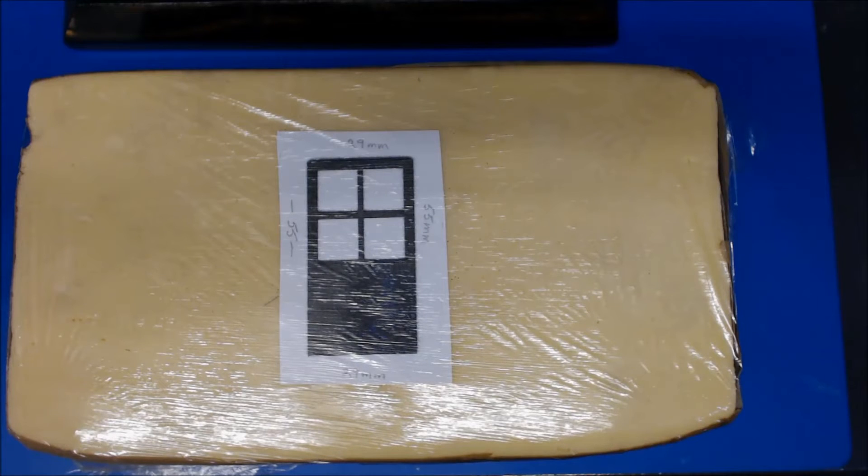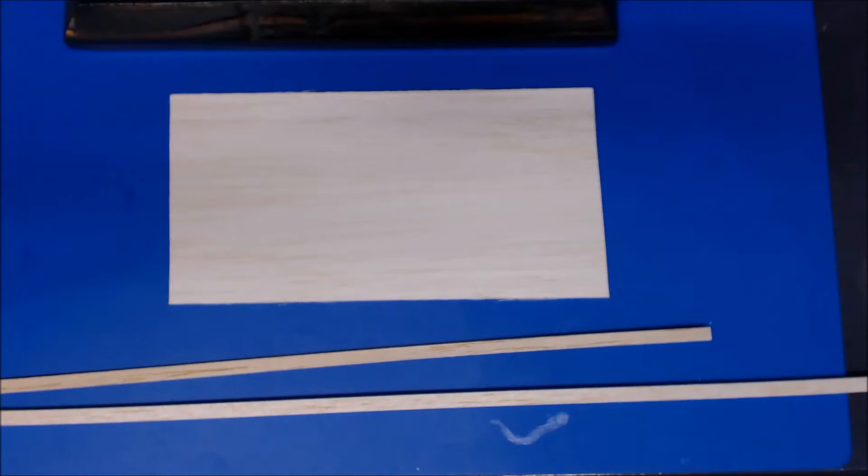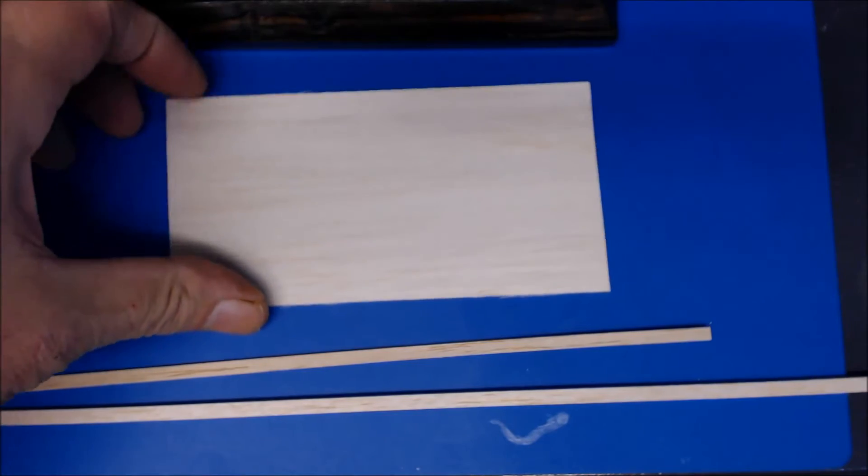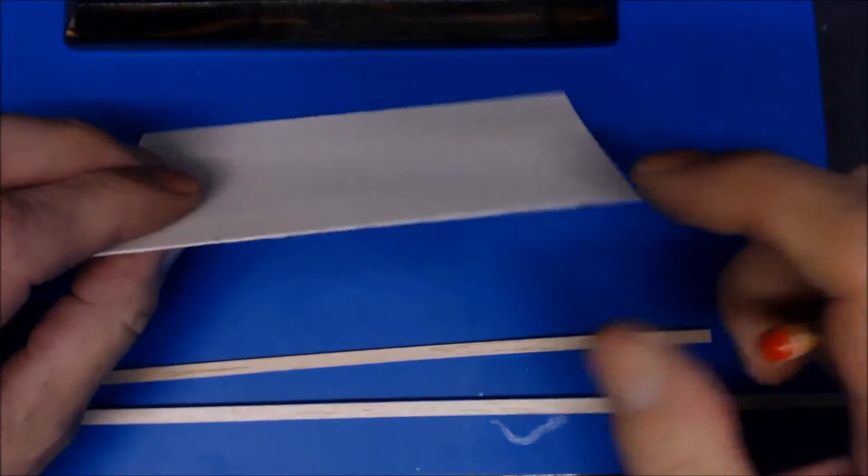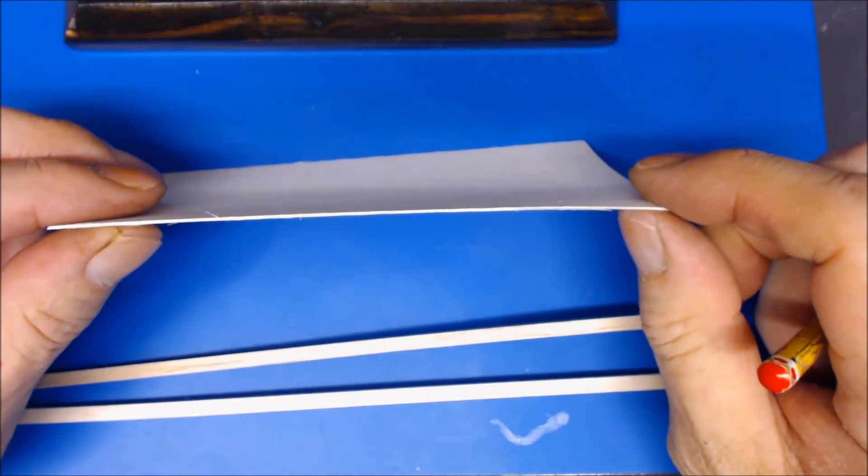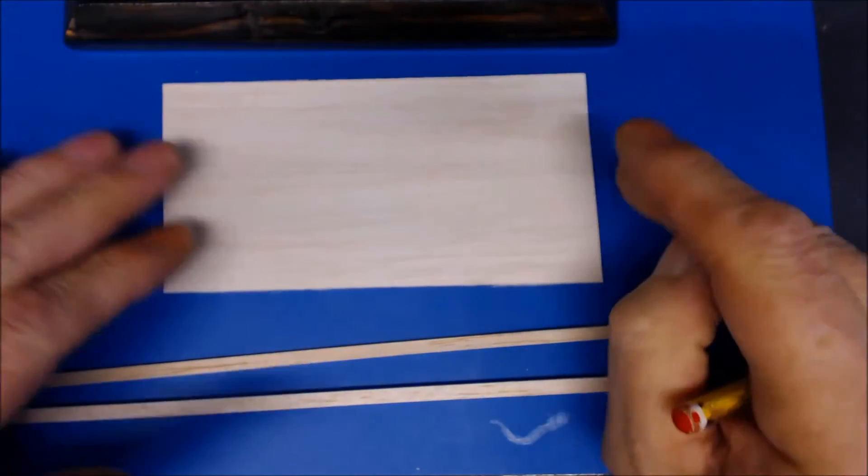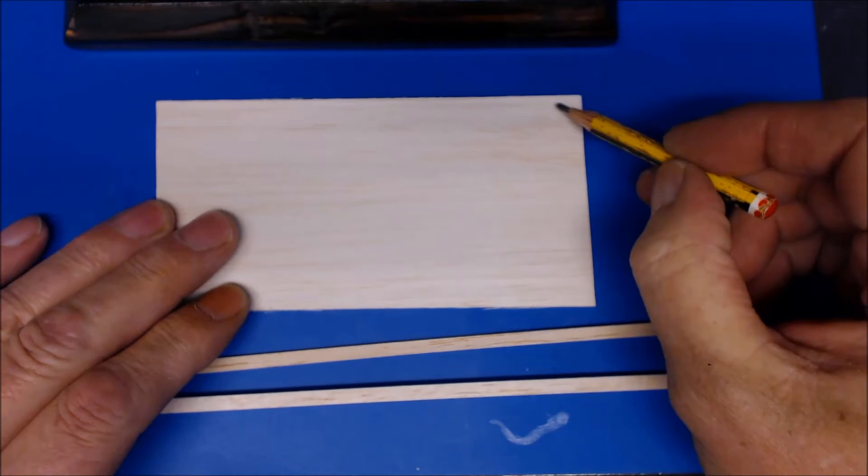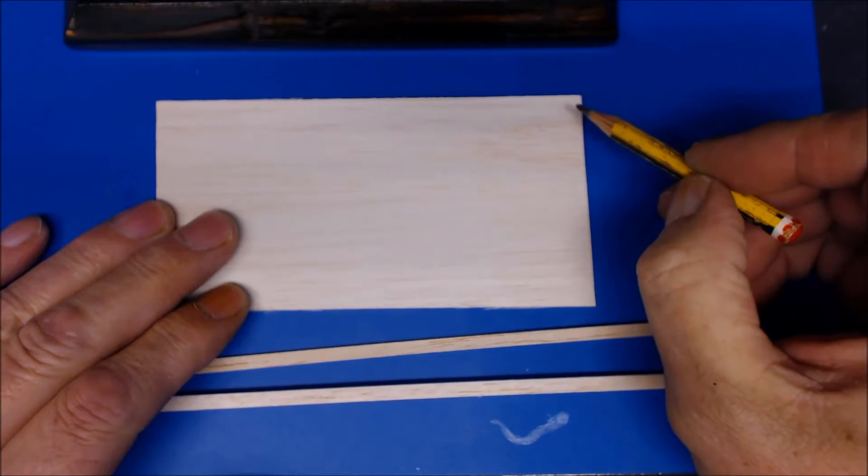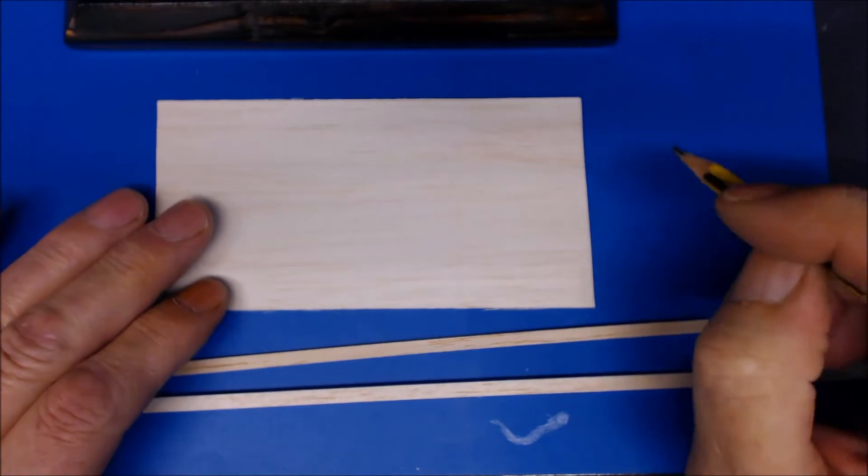Next thing, materials. This is just a piece of balsa wood sheet - it is one mil thick. This will be used for the actual door itself and we'll be cutting these down to a five mil strip to make the door panels.